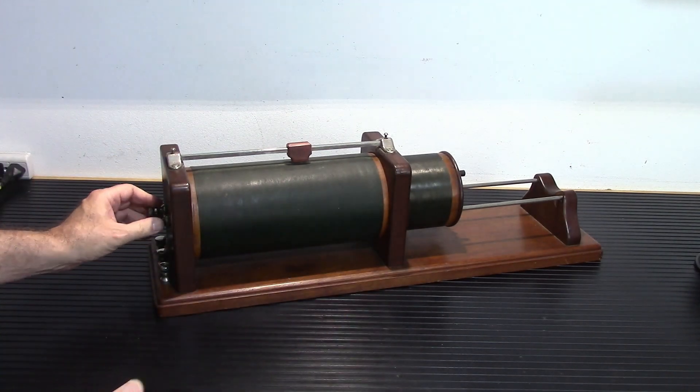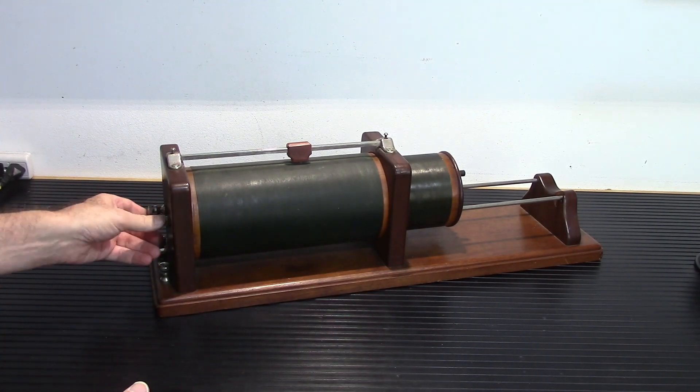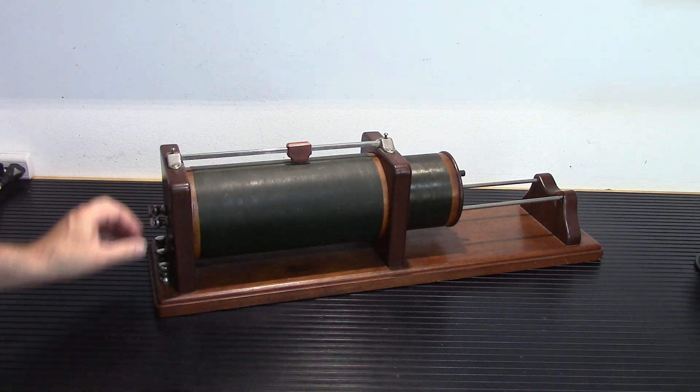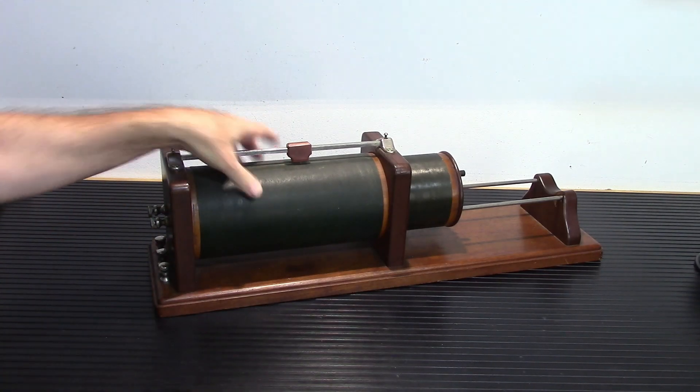So those are the basics of a loose coupler. I have my hookups back here. These two here are the hookups for the loose coil and these down here are the hookups for the fixed coil.